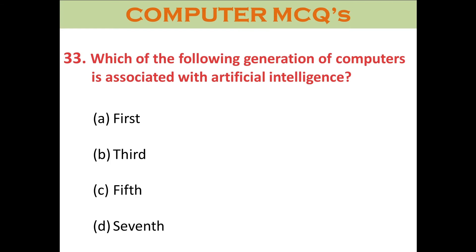Question thirty-three: Which generation of computers is associated with artificial intelligence? A. First. B. Third. C. Fifth. D. Seventh. The right answer is C: Fifth.